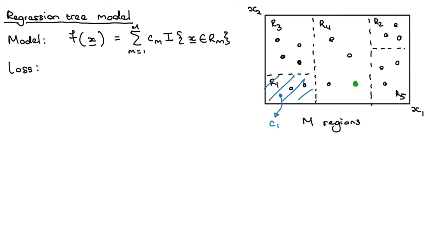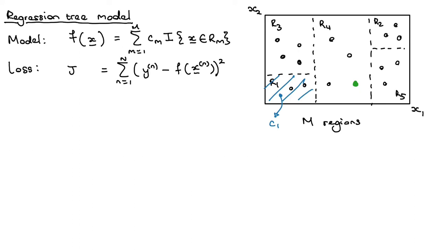Since we're trying to do regression, we'll use a squared loss. The loss is the sum over all training data points of the squared difference between the target value and the model's prediction for that data point.